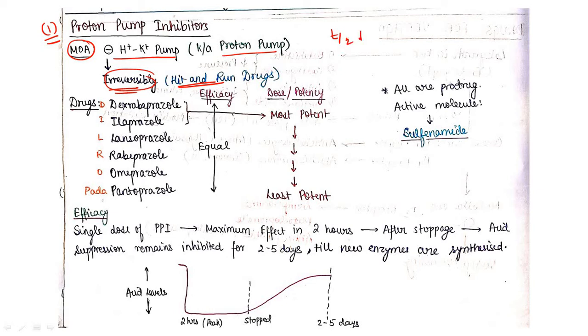The half-life is short but action lasts for a longer time. Now what are the drugs? You can remember like this: DEX-LA-RO-PA-DA. Dexlansoprazole, esomeprazole, lansoprazole, rabeprazole, omeprazole, and pantoprazole. These are the drugs which are coming in the paper. You can remember two or three: omeprazole, pantoprazole, rabeprazole, lansoprazole. Efficacy is same - all the drugs are equally efficacious. But when we talk about potency, dexlansoprazole is the most potent and least potent is your pantoprazole. Potency decreases in this order.